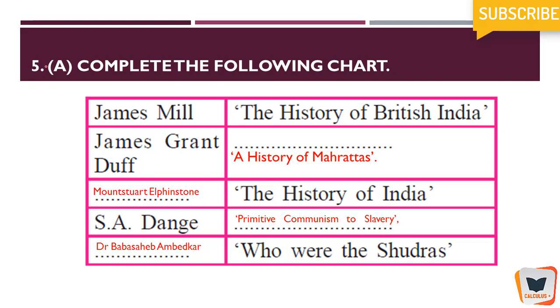Continuing with part 2, this is the 5th question: complete the following. James Mill had written the History of British India.